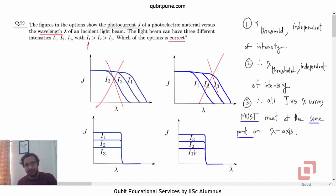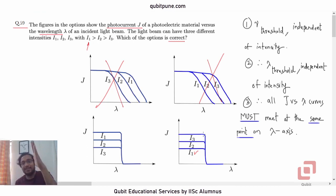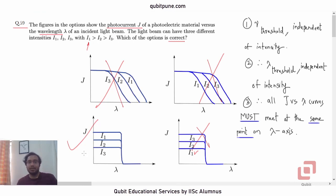In option D, I1 seems to have the smallest photocurrent for the given wavelength value, but we know that for a given wavelength below the threshold, the beam with the strongest intensity will produce the greatest photocurrent. So it is not option D, but it is this option — I1 having the greatest photocurrent among I1, I2, and I3 because its intensity is greatest. So the answer to the 59th question is that option.